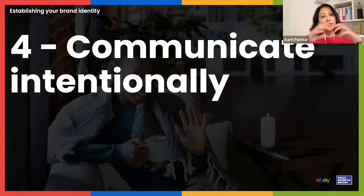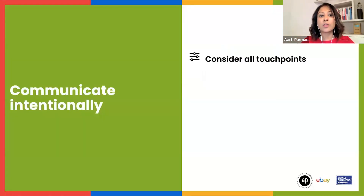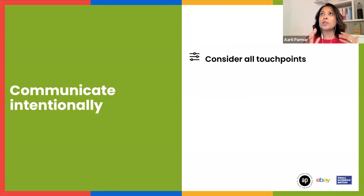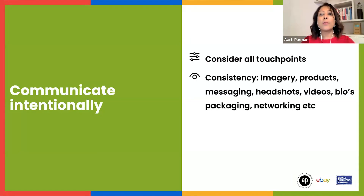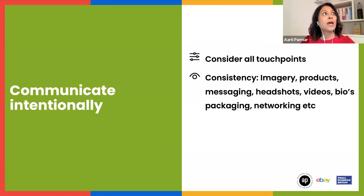Number four: communicate intentionally. You've now got the understanding of your brand and the look and feel of it, so now it's about communicating it intentionally. Consider all the touch points you're on — is there a seamless connection? Sometimes people might meet you at networking, come across your website first, come across your eBay portal, or find a blog or article. Is there consistency and congruency across all of those?